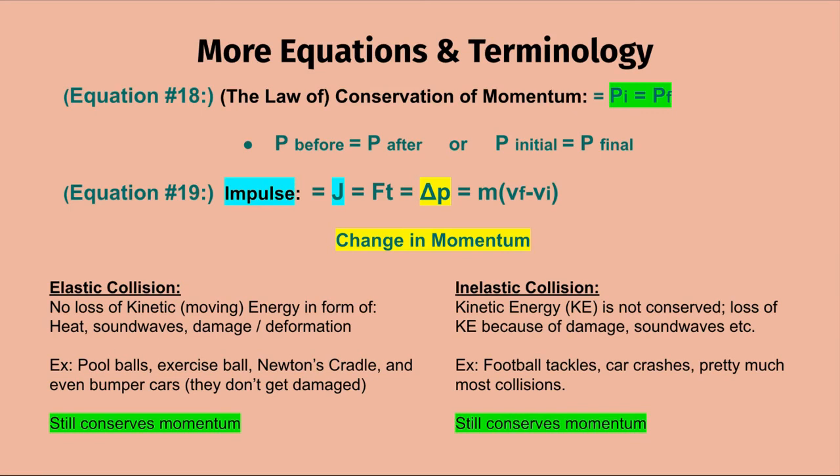Equation number 19 is impulse. The variable for impulse is j. The equation can look long, but you only use the part you need: j equals F times t, which also equals delta-p (the change in momentum), which also equals mass times (final velocity minus initial velocity).